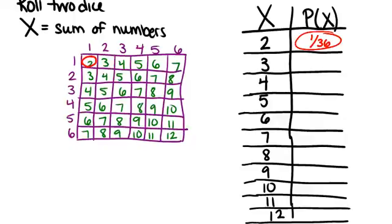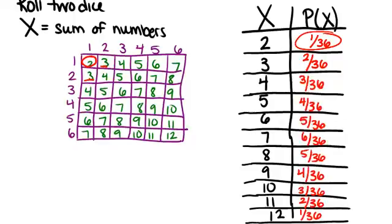And you would do the same thing for each of the different values of X. So if X is 3, we can see there are two places where the sum is 3. So the probability is 2 out of 36, or you could reduce that to 1 out of 18 if you prefer. You'd keep going and fill in all your probabilities until you've filled in your whole chart.